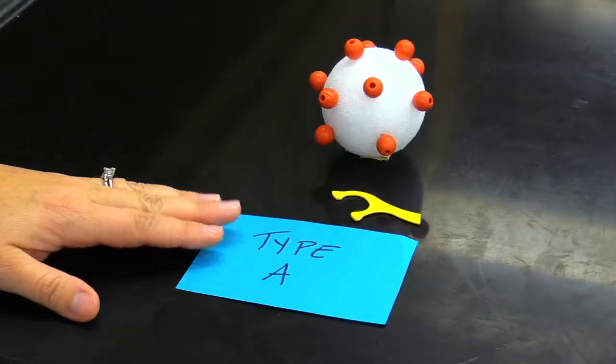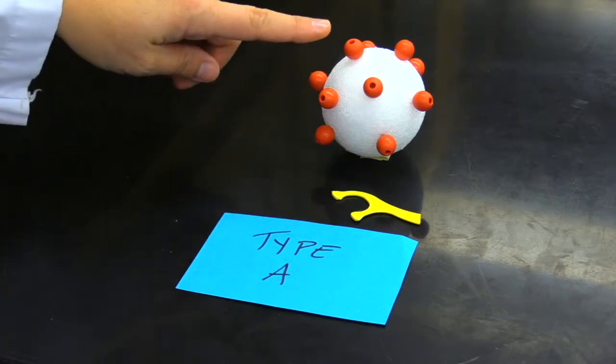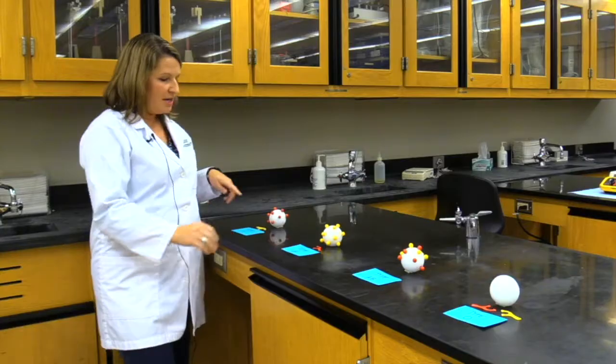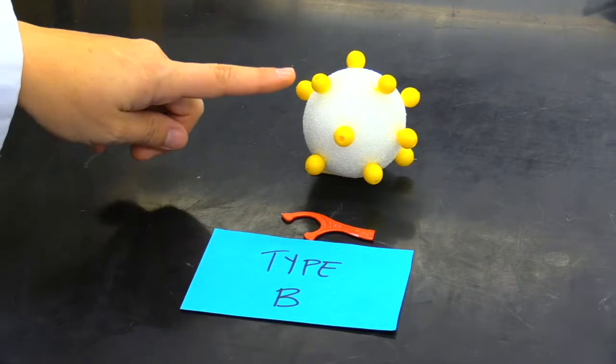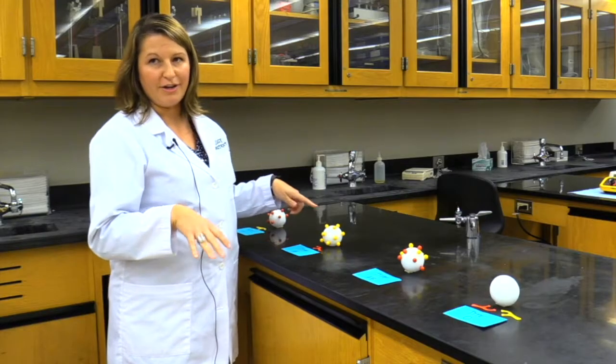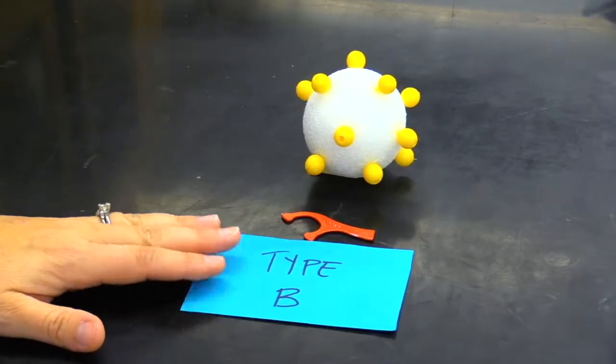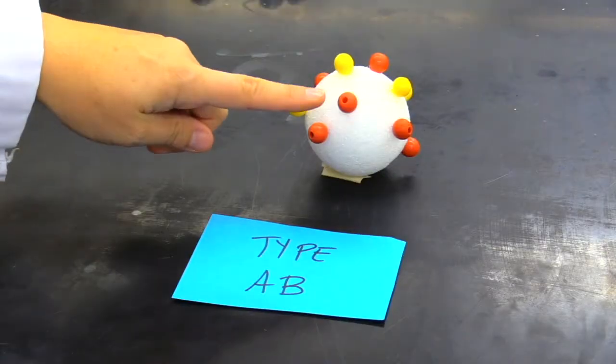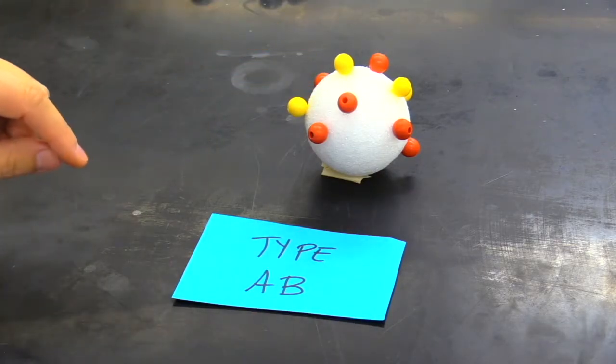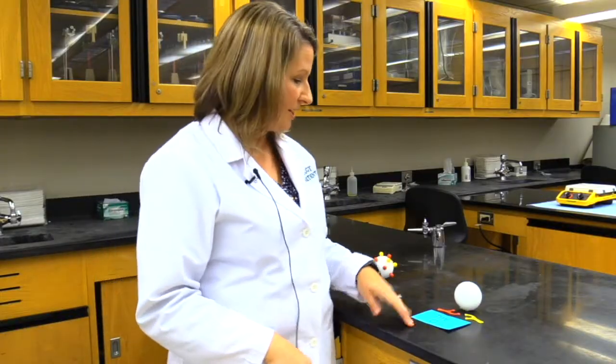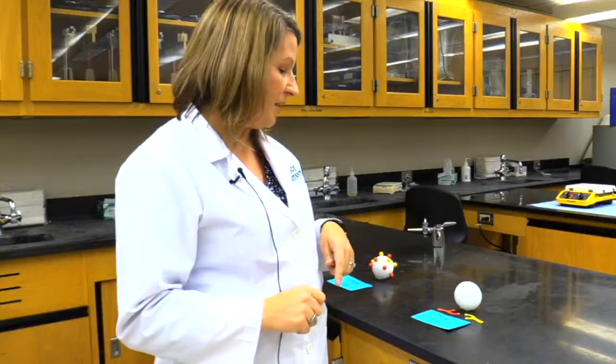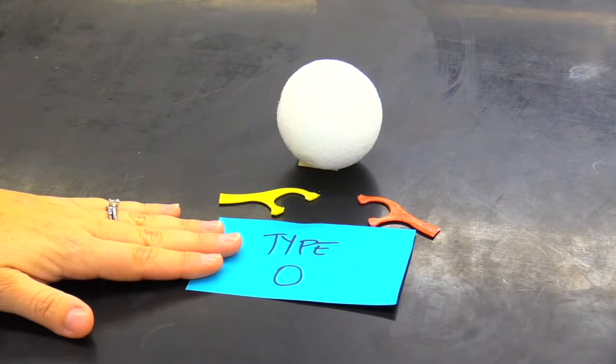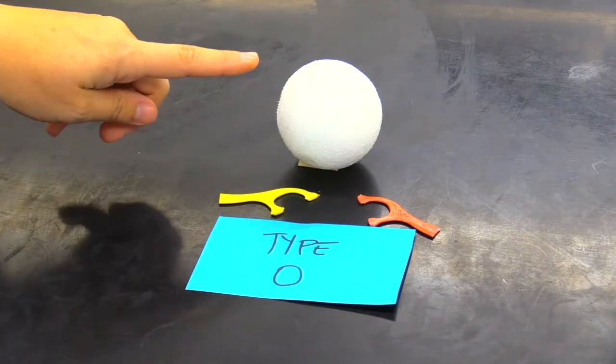We see that you can be blood type A, which has the red antigens on the surface of your red blood cells. You can be type B, which has the yellow antigens. They're not actually red and yellow, I'm just giving you a demonstration. Type AB has both antigens, the yellow and the red. And then type O has none, so that's a red blood cell that doesn't have either the A or B antigen. This is really interesting when we think about why this is important.